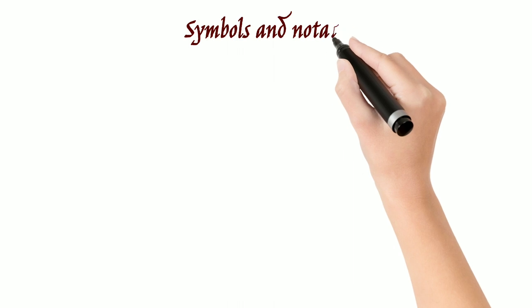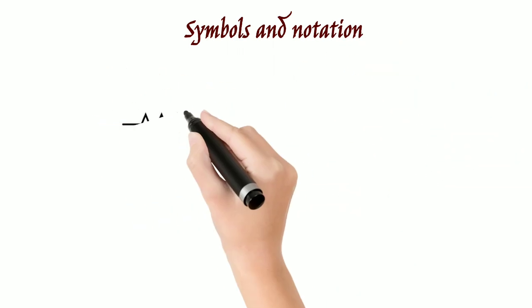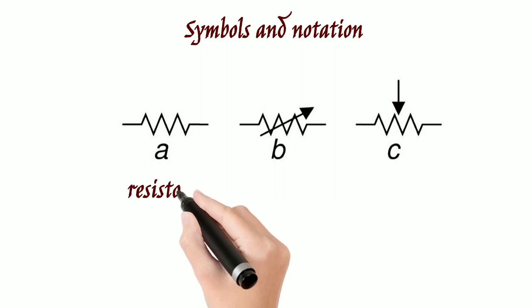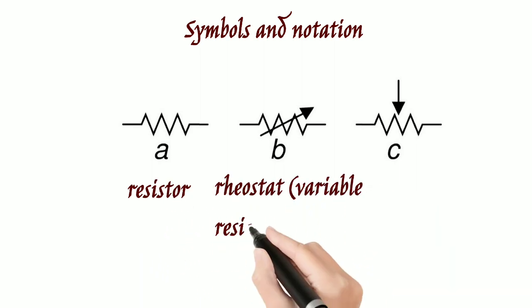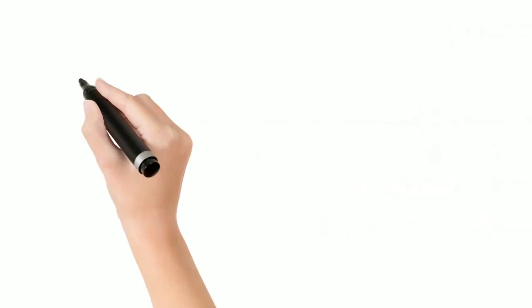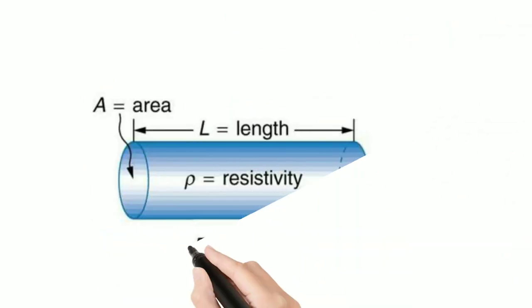Symbols and notation of resistance. Suppose a conductor has length L, area A, resistivity rho. Therefore, resistance R equal to rho L by A.